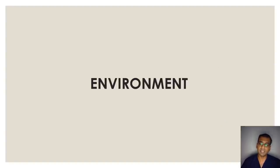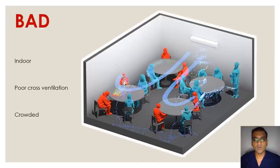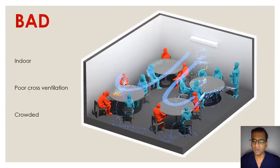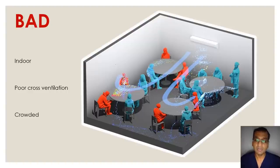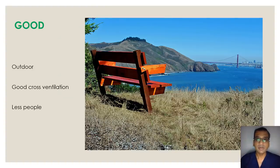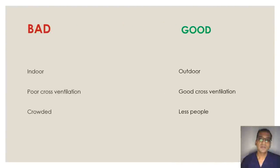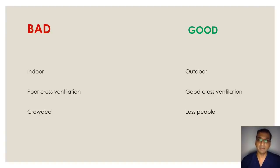The third factor influencing your chance of infection is environment. Indoors, poor cross-ventilation, and crowded places are all examples of bad environments. The classic bad environment is indoors with recirculated air and a large number of people in an enclosed area. However, bad factors don't always all exist together — a concert is outdoors with good ventilation, but a large crowd still makes infection risk very high. Good environments are outdoors with fewer people and good cross-ventilation. Outdoors is better than indoors, good cross-ventilation is better than poor, and fewer people is better than more.